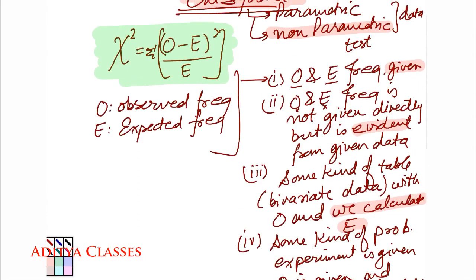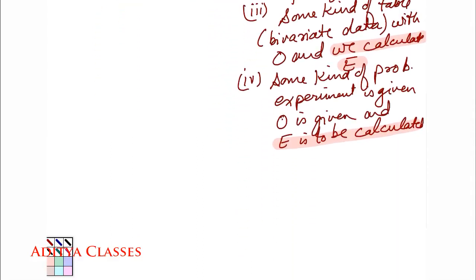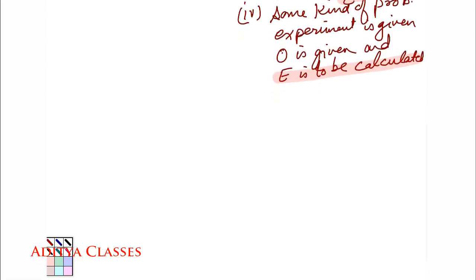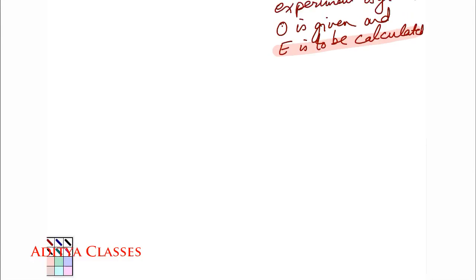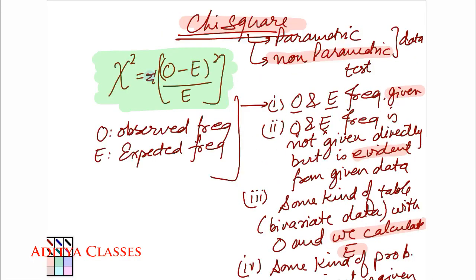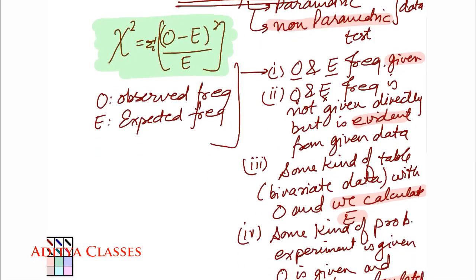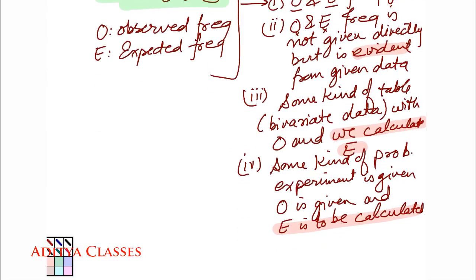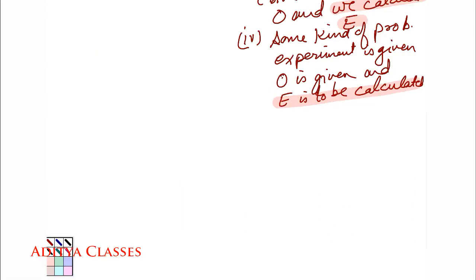Now, here we will take a very straightforward question in which O and E, observed and expected frequencies, both are given. Because this being our first discussion on chi-square, we should take a question in which we can understand these relationships, the chi-square table, the chi-square formula. So first we will take this simple case and then we will move on to some advanced cases. So for the simple case, let us import a question and then we will see what we can do about it.